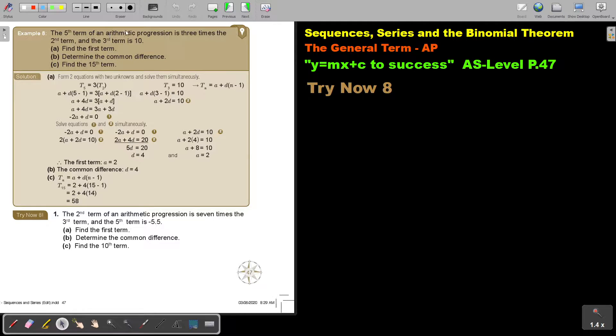The fifth term of an AP is three times the second term and the third term is 10. So it's a little bit more information, but let's just write it down in short. The fifth term is equal to three times the second term and the third term is 10.